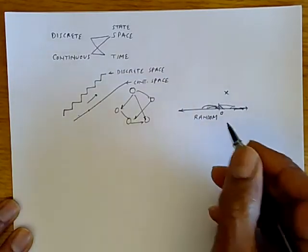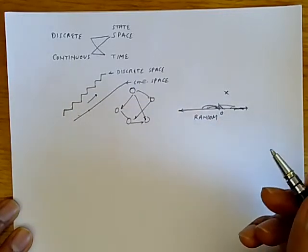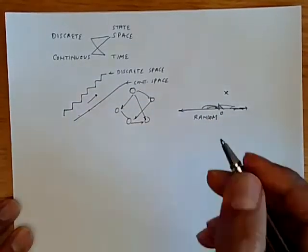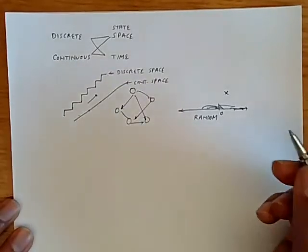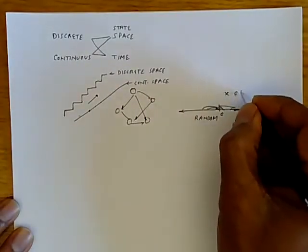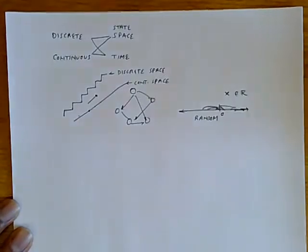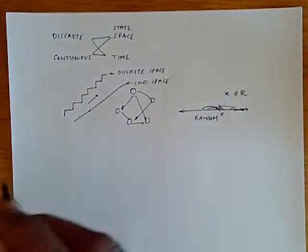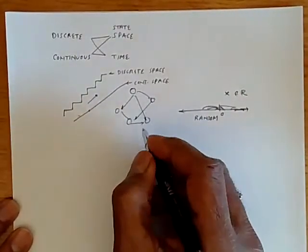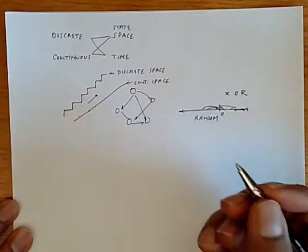And as you can see over here, the states assumed are infinite. They're actually all possible reals. And so we have this to be a continuous space process, whereas something that looks like a staircase or something that looks like this is a discrete state process.